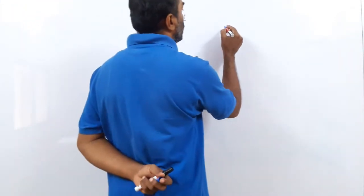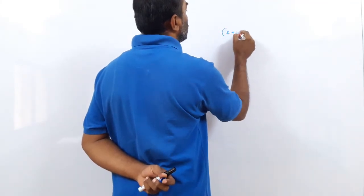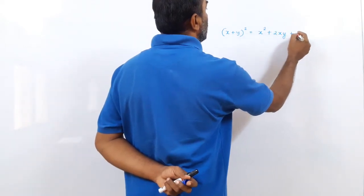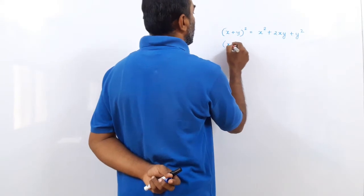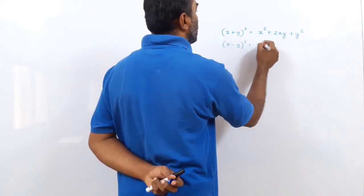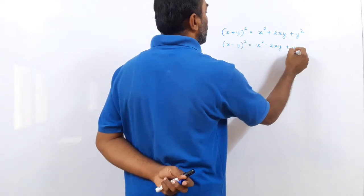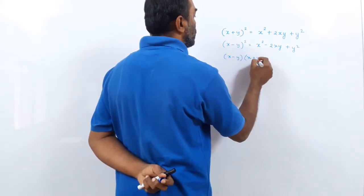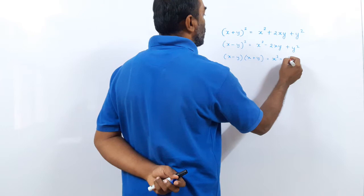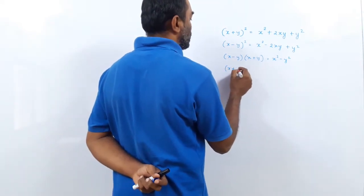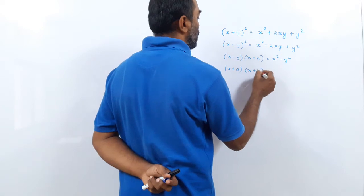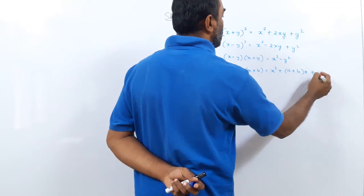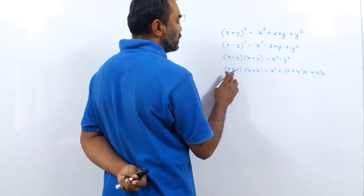We have the expansion: first, (x+y)² = x²+2xy+y². Then (x-y)² = x²-2xy+y². Then (x-y)(x+y) = x²-y². Then (x+a)(x+b) = x²+(a+b)x+ab. The plus in these brackets may change accordingly.